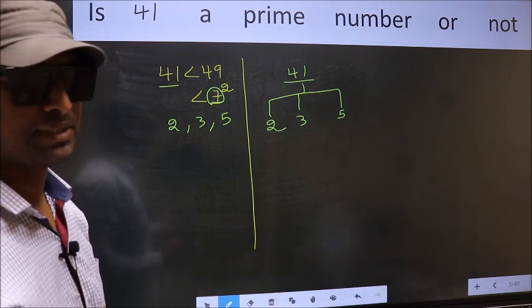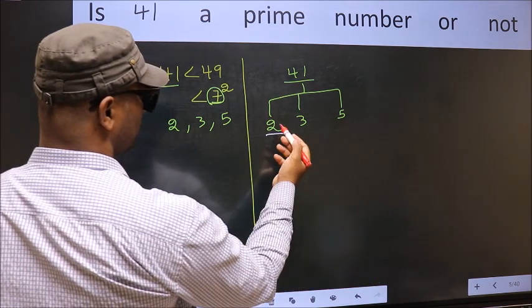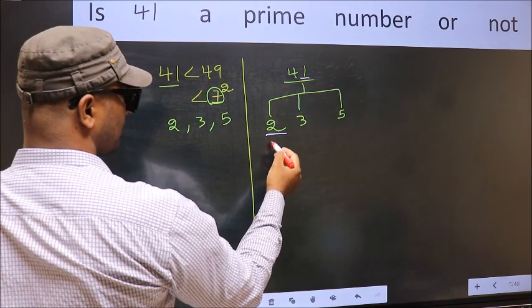Let us check the divisibility. First with 2. Last digit 1, not even, so this is not divisible by 2.